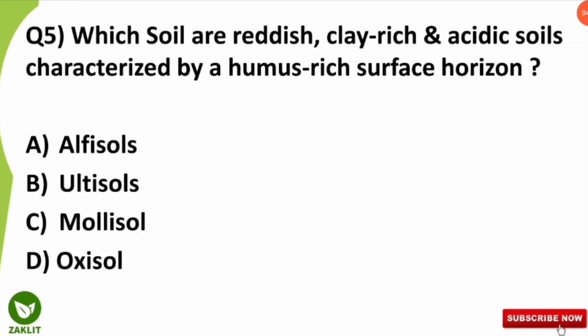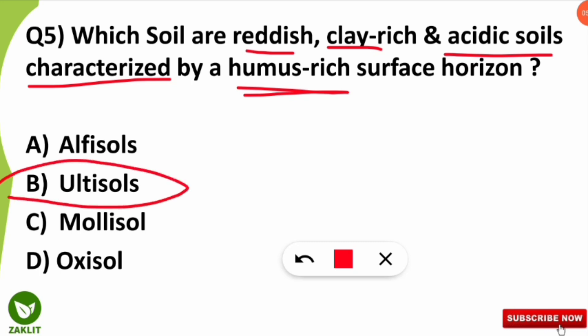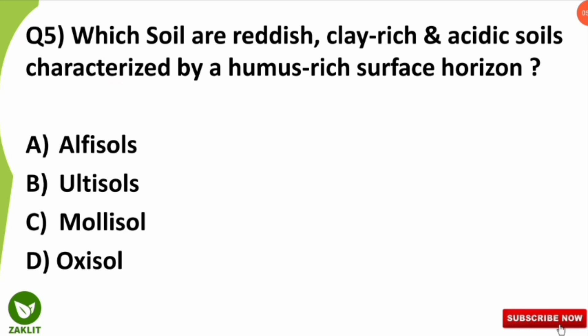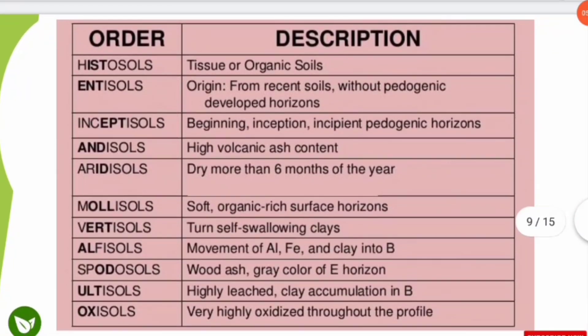Next question: which soils are reddish in color, clay-rich, and acidic, characterized by a surface horizon rich in humus content? The answer is Ultisols. Ultisols are reddish, highly leached, clay-rich, and acidic soils characterized by a surface horizon with high humus content. This is one of the frequently asked questions on soil types and their characterization.